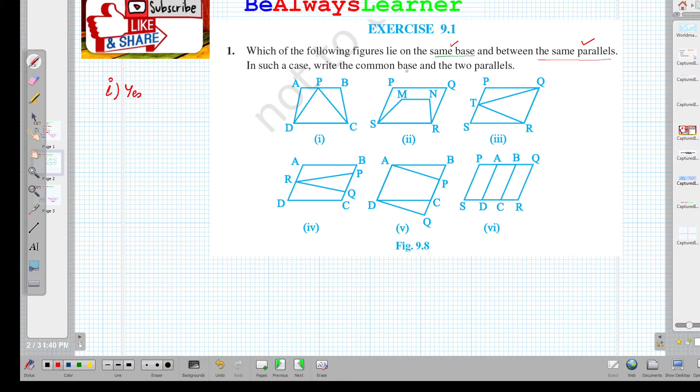The common base is DC, and the two parallel lines are AB and DC, where AB is parallel to DC. That is the answer for the first part. Second part: